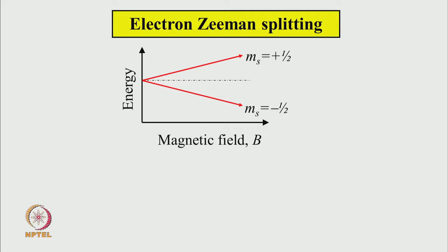The energy difference between the two states with m_s = +1/2 and m_s = -1/2 depends on the strength of the magnetic field. If the field strength is small, the splitting will be small; if the strength is large, the splitting will be large. The splitting changes linearly with the magnetic field.